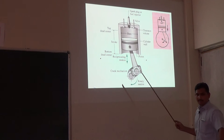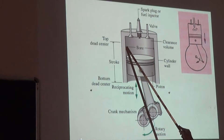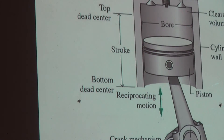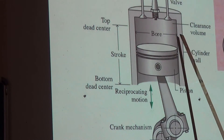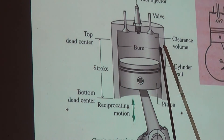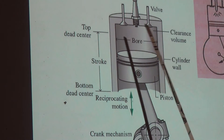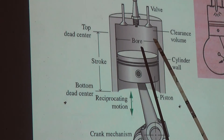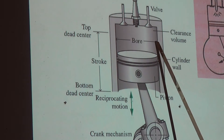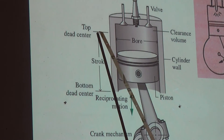Now let us understand some parameters. The first parameter is bore. The definition of bore is: bore is the internal diameter of the cylinder. If you look at the cylinder from a top view it will appear circular, and for a circle we have a diameter. That particular diameter is called the bore diameter, or simply bore.